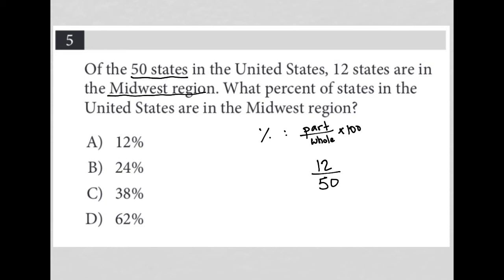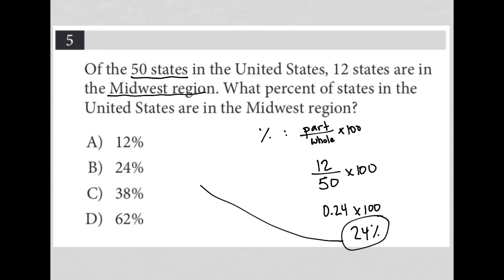So 12 divided by 50 times 100 is what we're doing. You can go to your calculator, and if you do 12 divided by 50, you will find that is 0.24. So we multiply that by 100 and we get 24 — and this is our percentage. Therefore, the correct answer here is choice B.